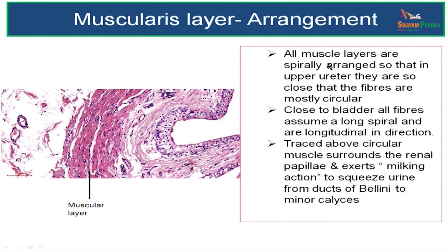If you look at all the muscle layers in the wall of the ureter, they are spirally arranged so that in the upper ureter they are so closely arranged that the fibers are mostly circular.